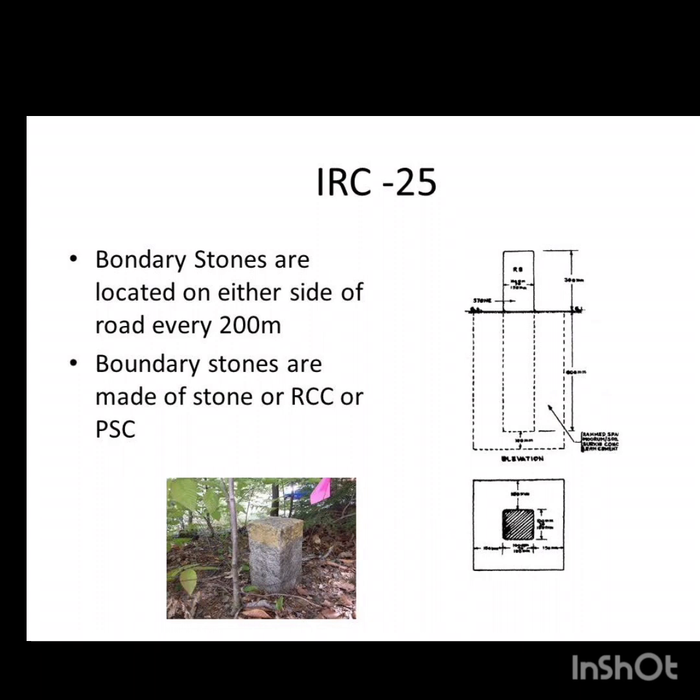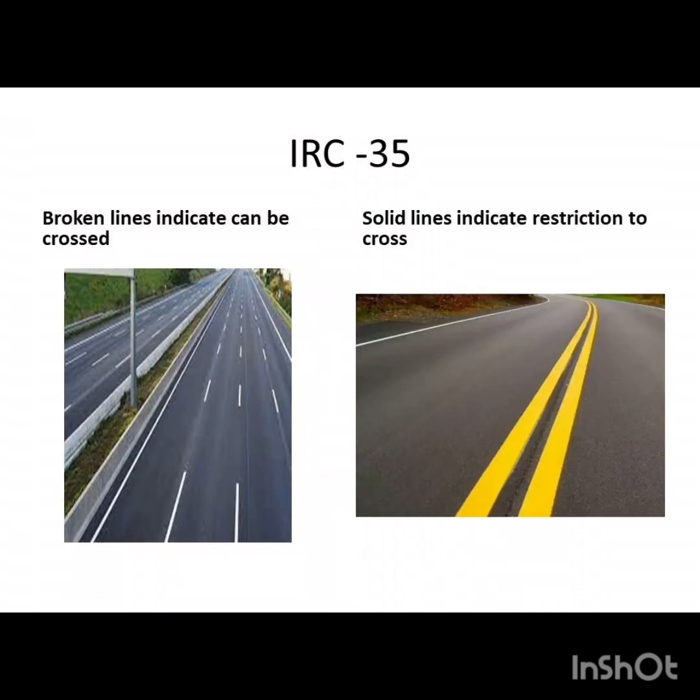For the boundary stone, what is visible at the top is 300 mm and the foundation is 600 mm. Next, in ISC 35, we learn about road markings. Broken lines indicate that passing is permissible, while solid lines at the edges of roads and at the center line indicate a strict restriction — vehicles must not transgress to the other side of the pavement.